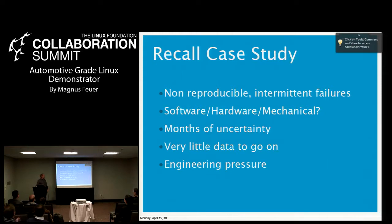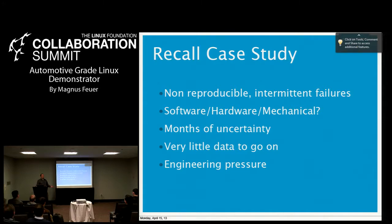I'm going to use a recall case study as an example, with its basis in a real-world recall from a couple of years ago. We're looking at a deployed fleet of a million vehicles, and suddenly you start getting intermittent reports of brake failures — people saying they pressed the brakes and nothing happened. You cannot recreate it, somebody crashed, you got the vehicle in, all the logs were cleared, no error codes, no events, nothing out of the ordinary. So you don't really know what's going on.